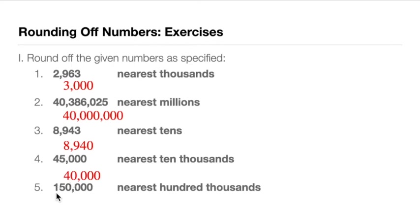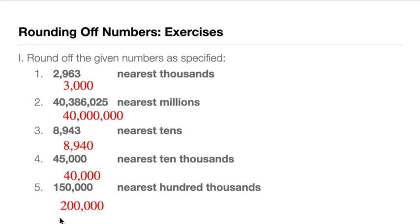For number 5: 150,000 rounded to the nearest hundred thousands. The hundred thousands digit is 1, and to the right of it is 5 — again exactly 5. We go back to the 1 and ask if it is even or odd. Since 1 is odd, by the banker's rule we add 1 to it. The answer is 200,000.